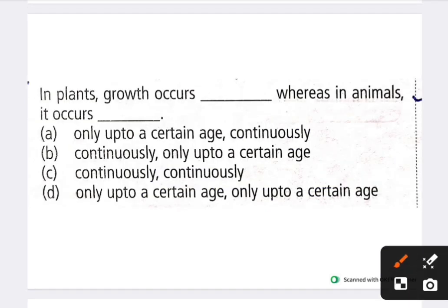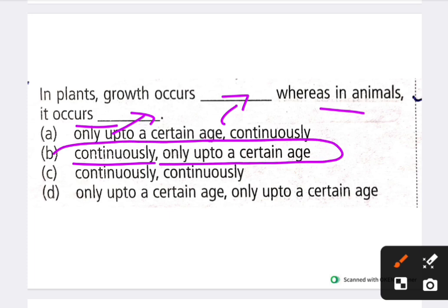Next question: in plants, growth occurs whereas in animals it occurs — fill in the blanks. The answer is option B: in plants, growth occurs continuously, whereas in animals it occurs only up to a certain age.